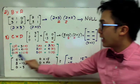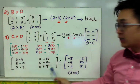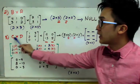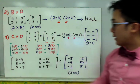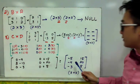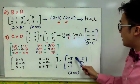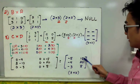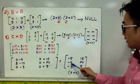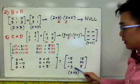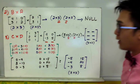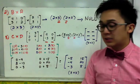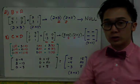Simplifying the product of C times D gives us a 3 by 2 matrix with entries: negative 5, 15, negative 4, 20, negative 3, and 5. And that is how we multiply matrices with different orders.